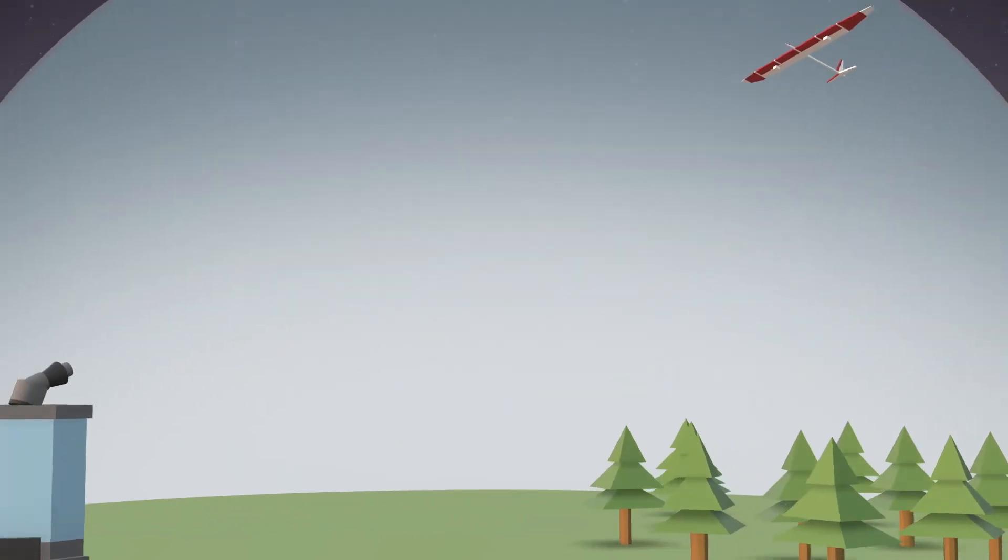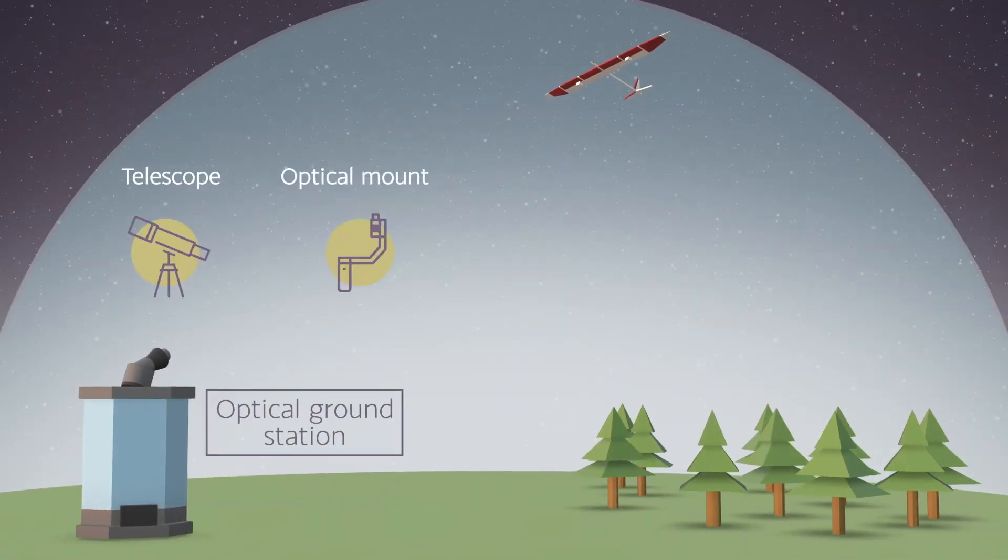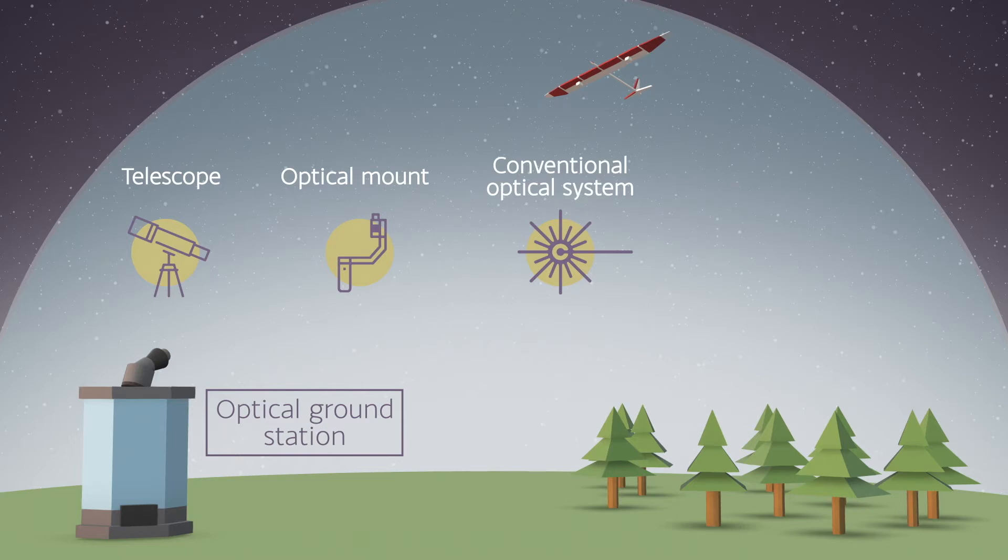The optical ground station is made of a telescope, a fast-tracking optical mount to hold the telescope and other optical systems, the conventional optical systems to measure the non-quantum signals, the quantum measurement, and a radio frequency or millimeter wave or optical system capable of measuring the conventional GPS and comms signals.